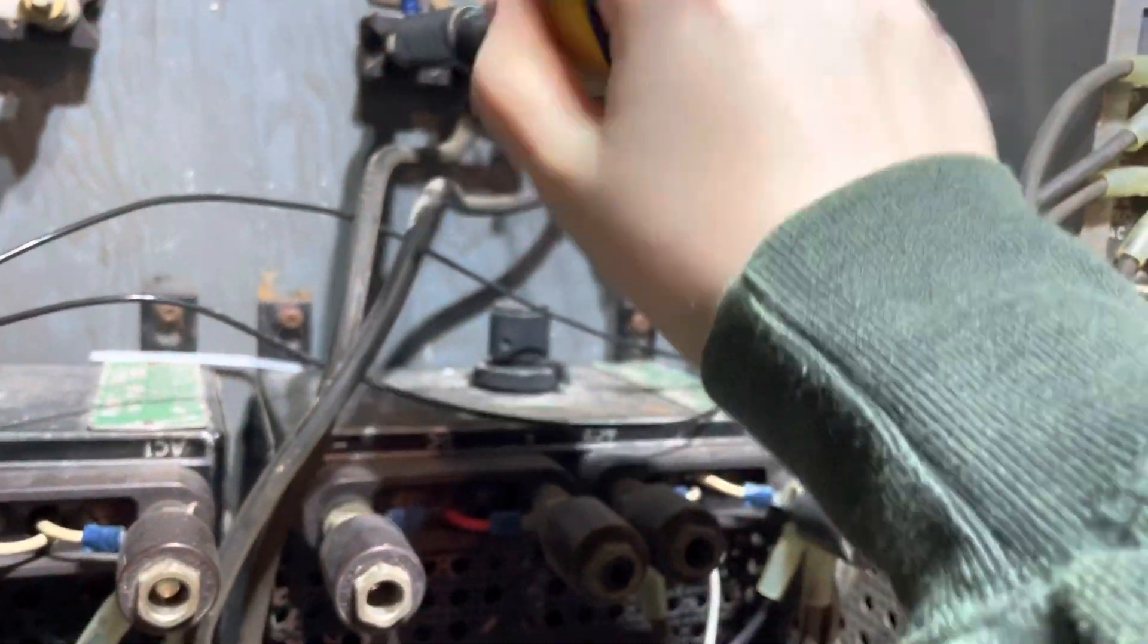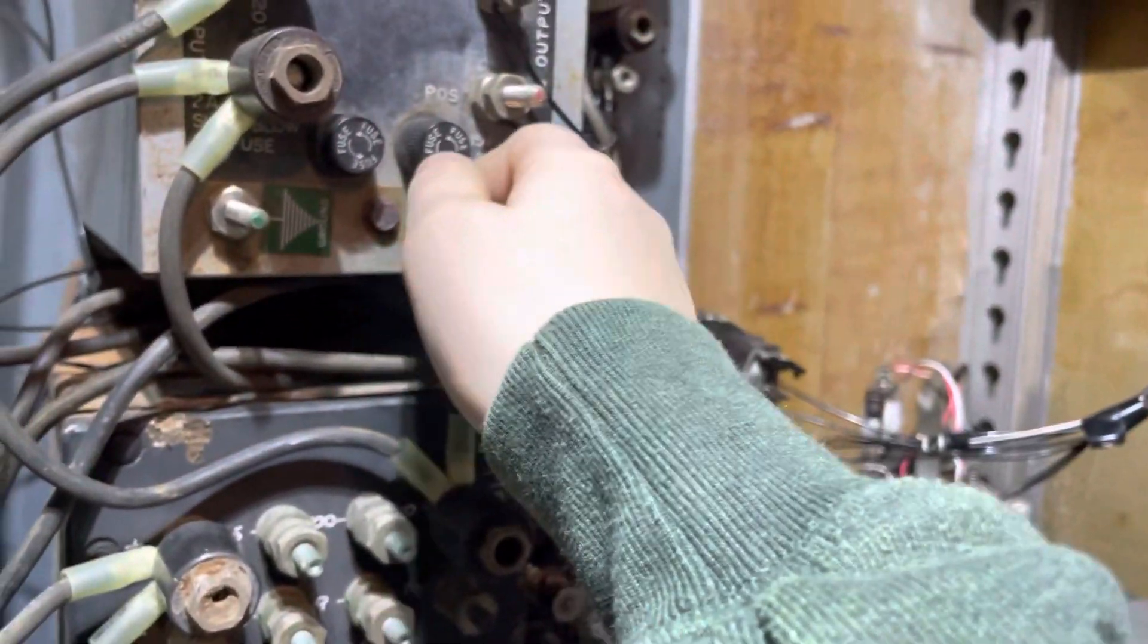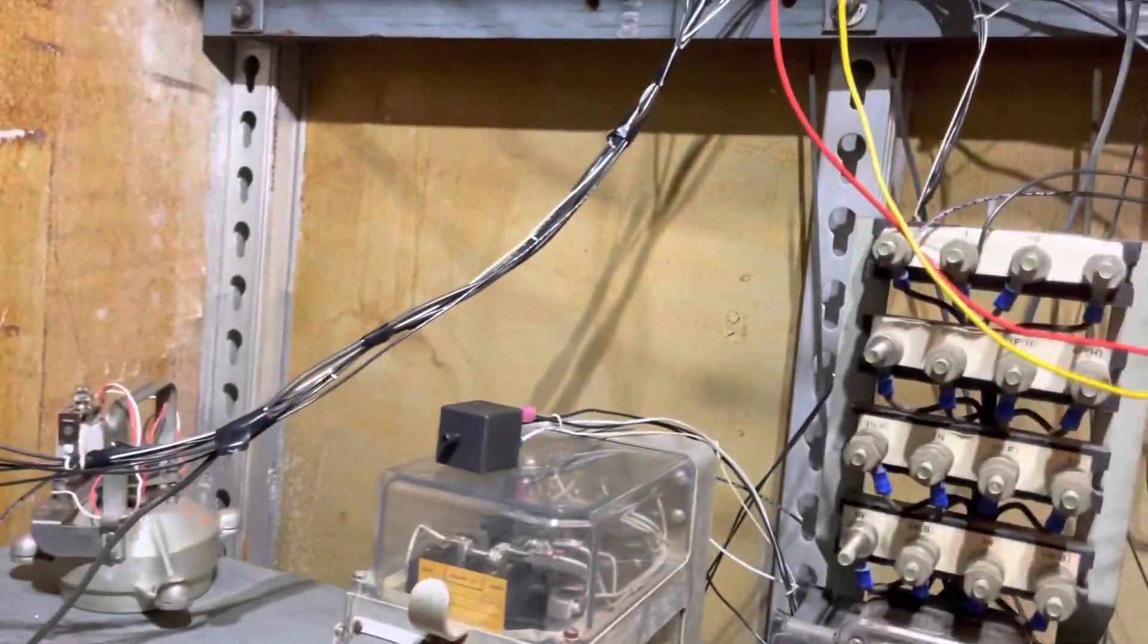First, we disconnect the power to the contacts, then to the coils, the track circuit. The relay is now completely de-energized.